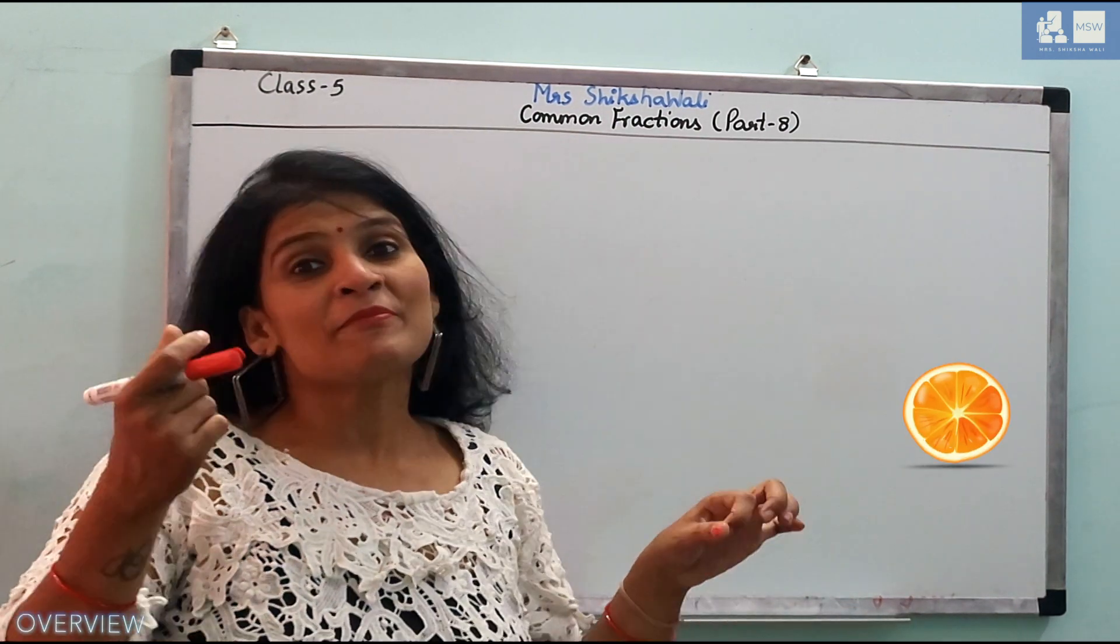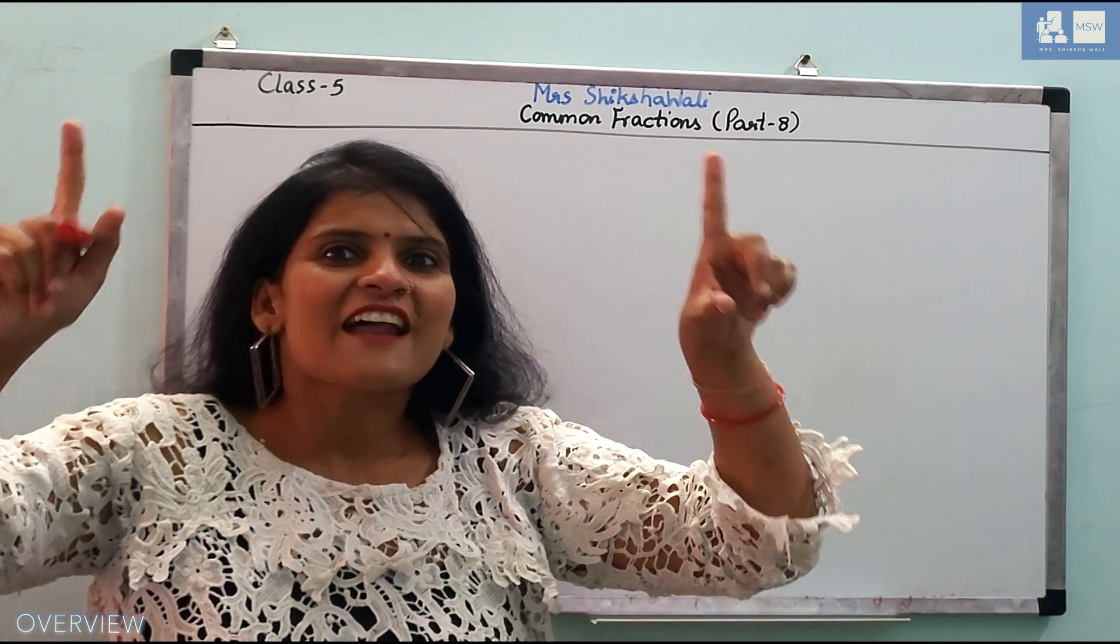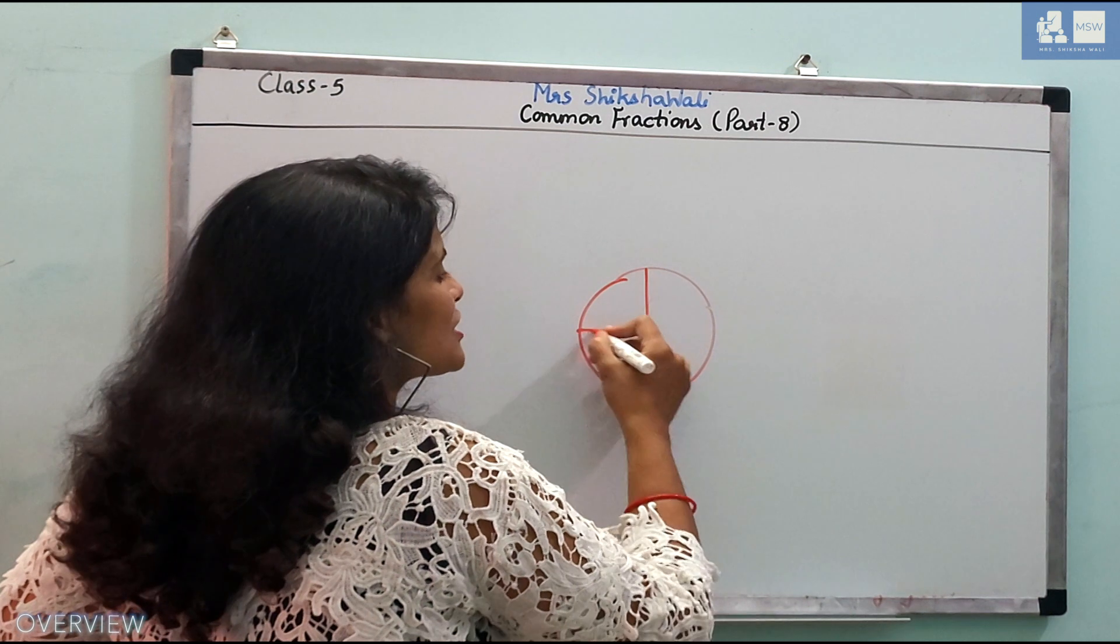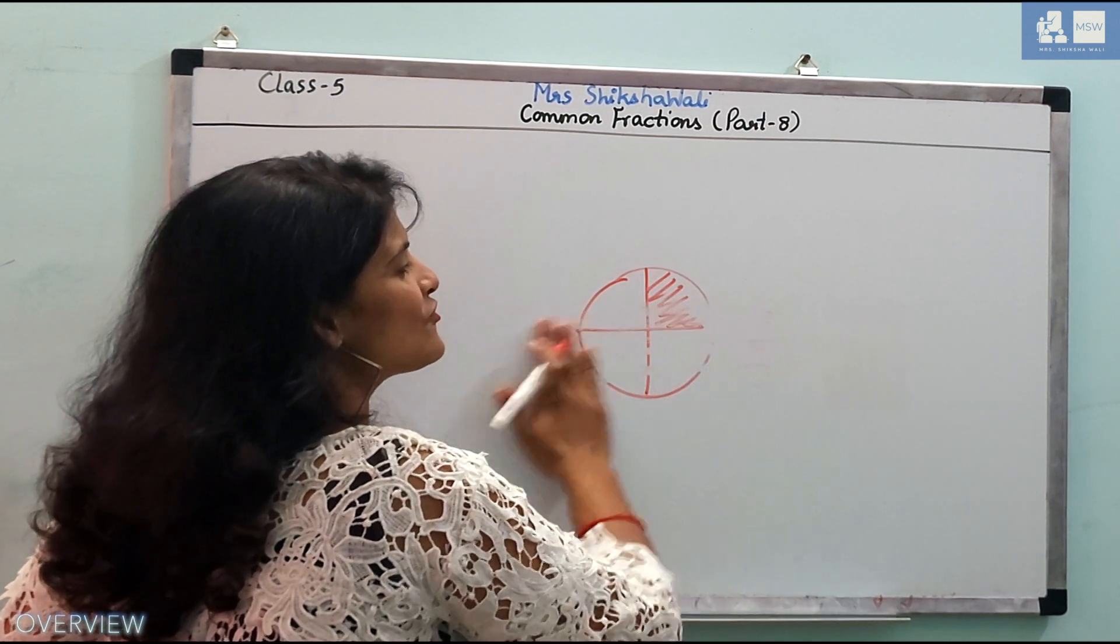In orange, we ate two slices. Total eight slices. Recall your examples. Now, if we have 4 slices, then we have a slice of 1 by 4. This is fraction.